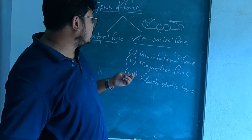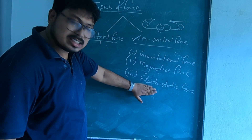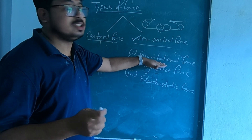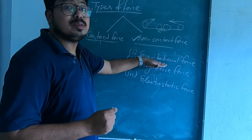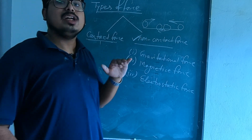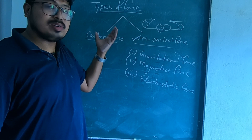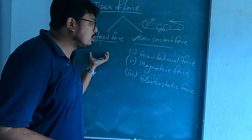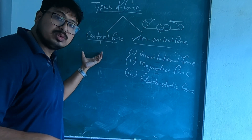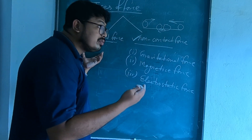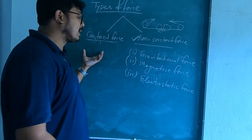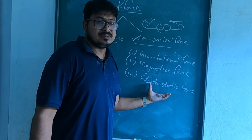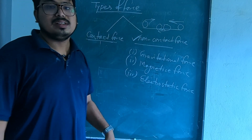Now, can you tell me the difference between these three non-contact forces? Electrostatic force has both attraction and repulsion; magnetic force also has attraction and repulsion. But in the case of gravitational force, there is no repulsion — there is only attraction. So, in this class, we have learned about the types of forces: contact force and non-contact force. Contact forces include applied force, muscular force, tension force, frictional force, force due to collision, and mechanical force. Non-contact forces include gravitational force, magnetic force, and electrostatic force. In the next class, we will discuss more topics. Thank you.